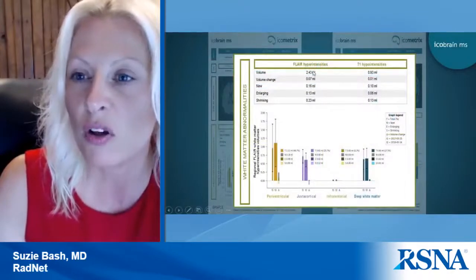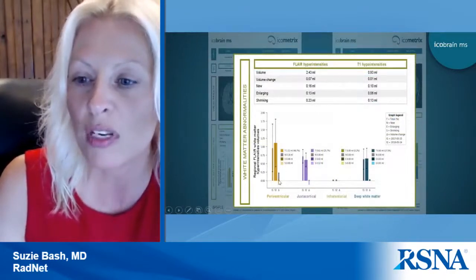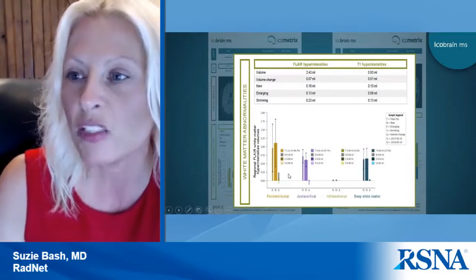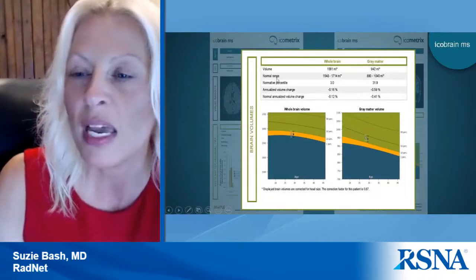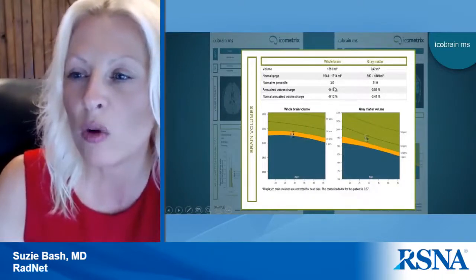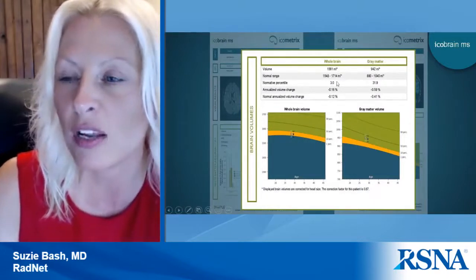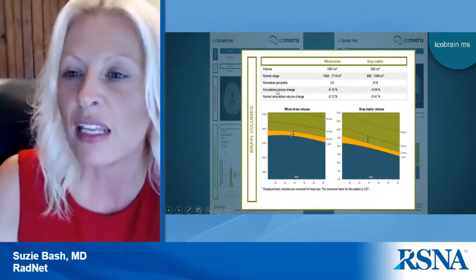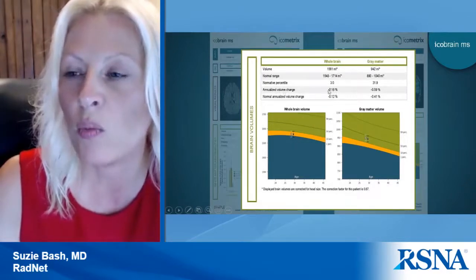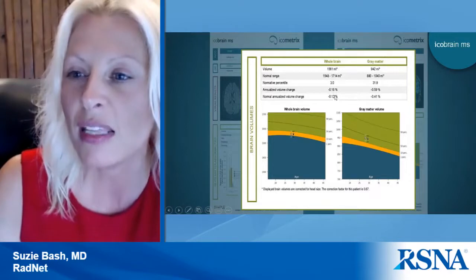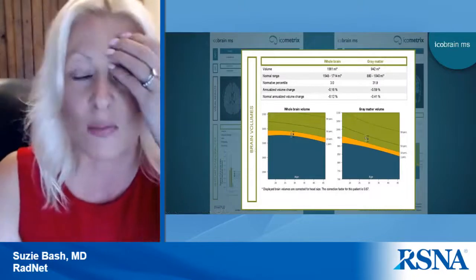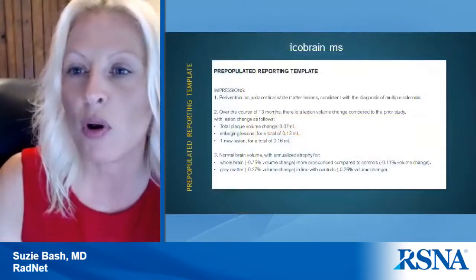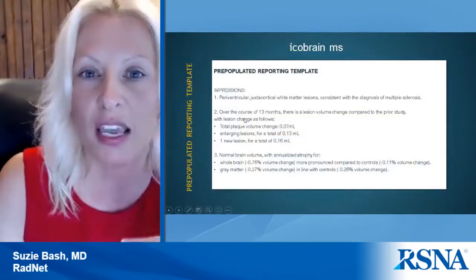The icobrain MS report's second page tells us whole brain volume, gray matter volume, normative percentile — for example this patient is at the 3rd percentile for their particular age and gender — and then annualized volume change: how much volume they've lost since their prior time point and how much they would be expected to lose for their age and gender. This report also has a pre-populated reporting template that can be brought into your dictation system.